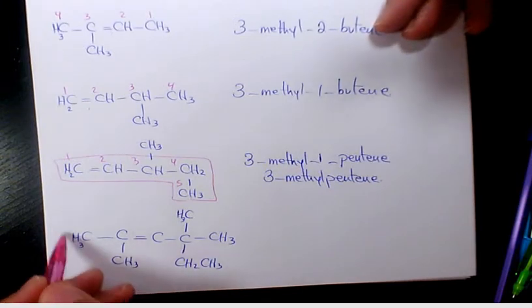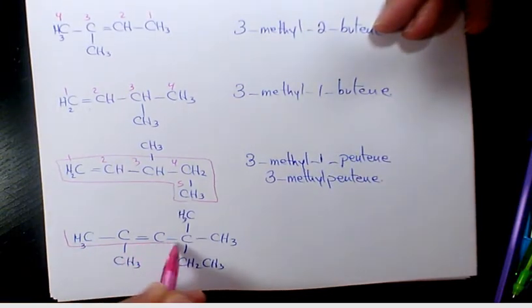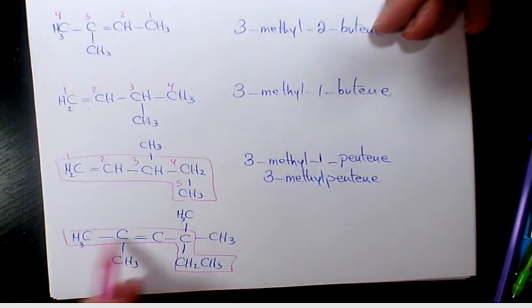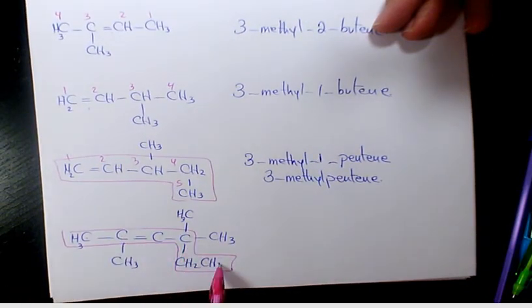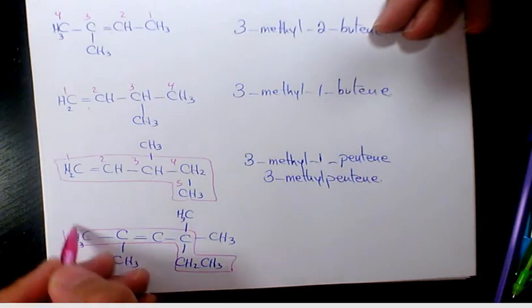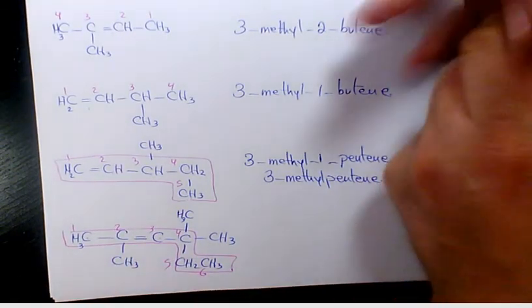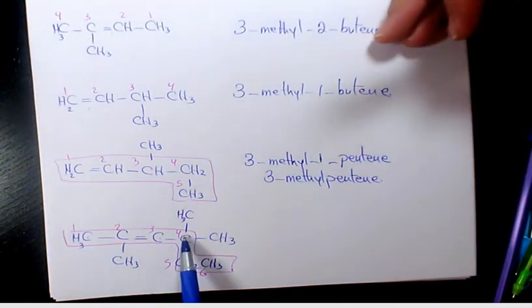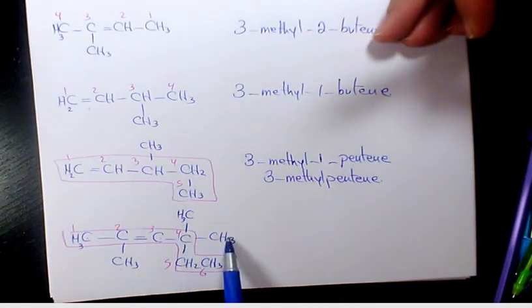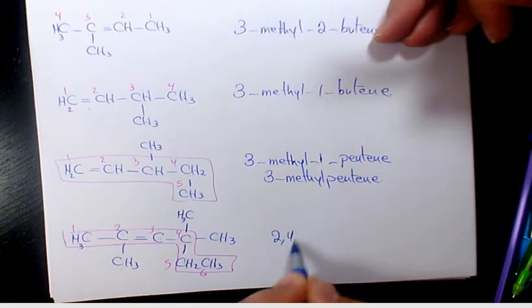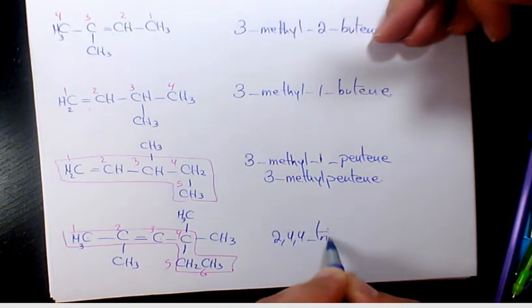One, two, three, four, five, six carbons on the main one. So one, two, three, four, five, and six. We have two-methyl, four-methyl, and four-methyl. So two, four, and four—three methyls.